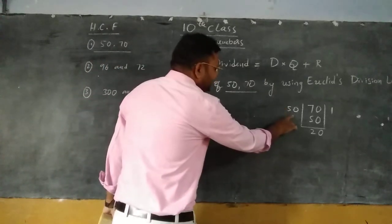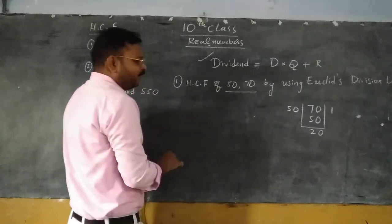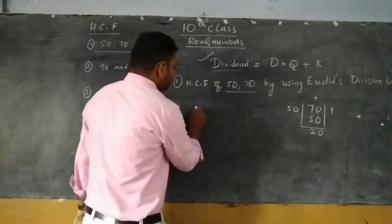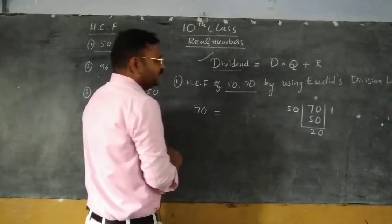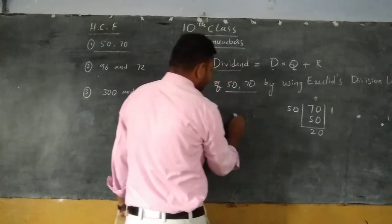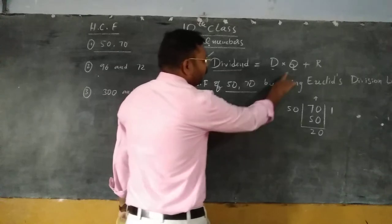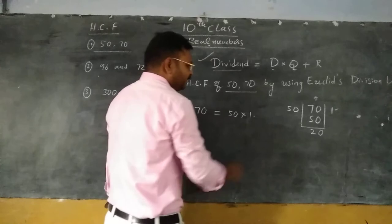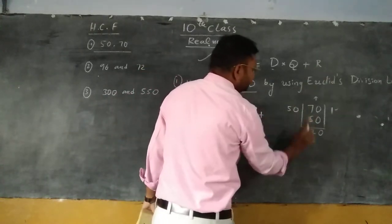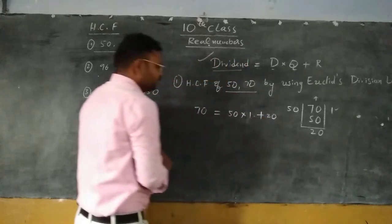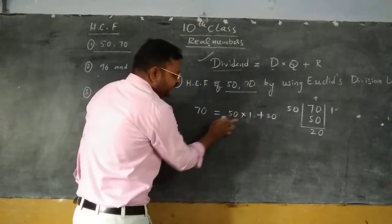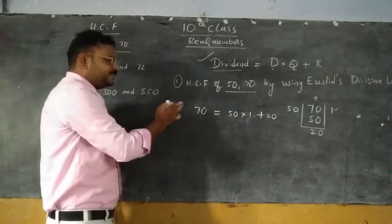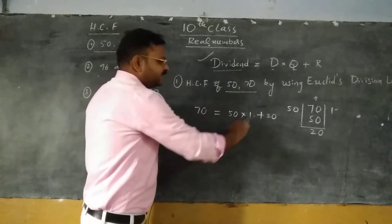So now for this division, write Euclid's division lemma. What is the dividend here? 70 is the dividend. What is the divisor? 50 is the divisor. 50 into — what is the quotient? Quotient is 1. Plus — what is the remainder? Remainder is 20. So 50 plus 20 is 70. This rule is called Euclid's division lemma.